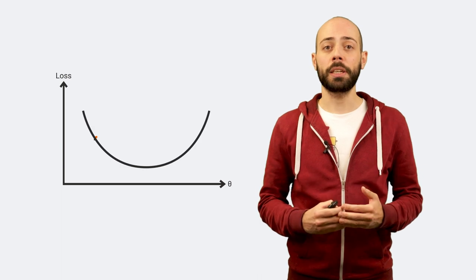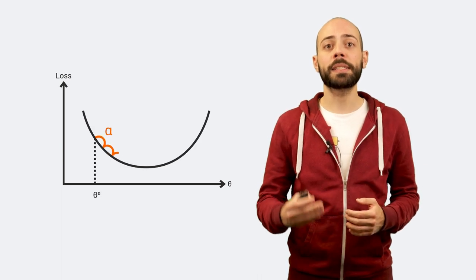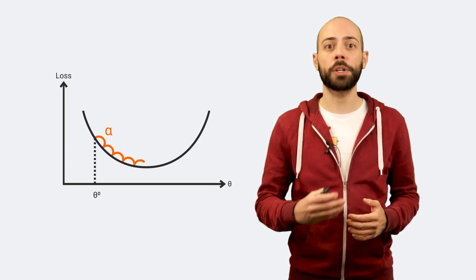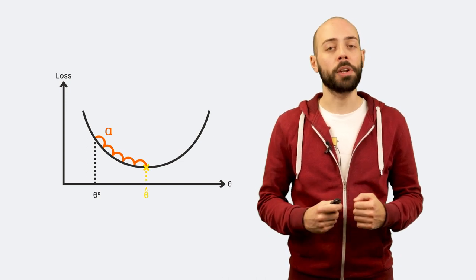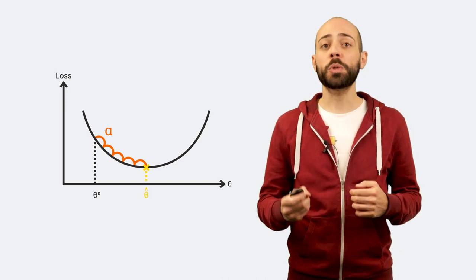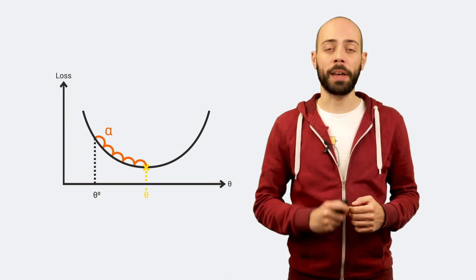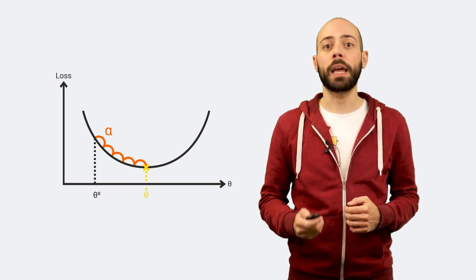At each iteration, the learning rate determines the step size that helps the model converge towards the minimum value of a given loss function. It is usually a small fixed positive value in the range between zero and one.